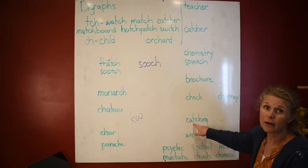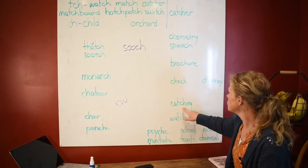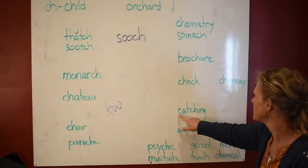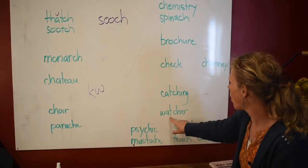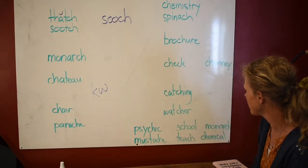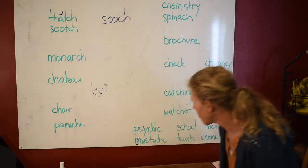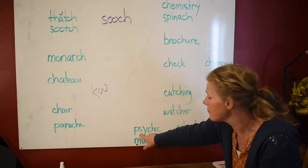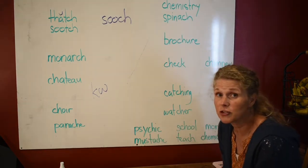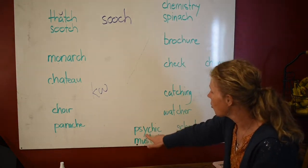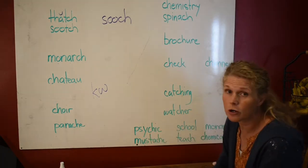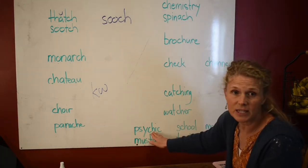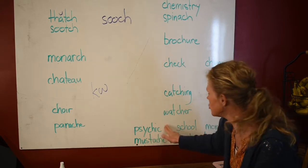Now look at this CH — you have a T in there. Can you see that? So we know this is going to say 'catch.' Same thing here: 'watch.' Now look at these words — if you have a word with PS, this is another digraph. This says 'I'm Greek.' Y in the middle of a word beginning also tells you it's Greek. So if you see that, you will know the CH is going to be the K sound. You don't even have to guess. So this says 'psychic.'